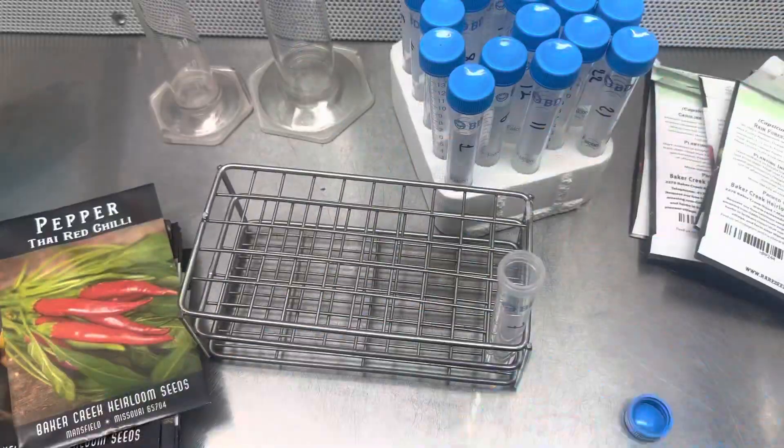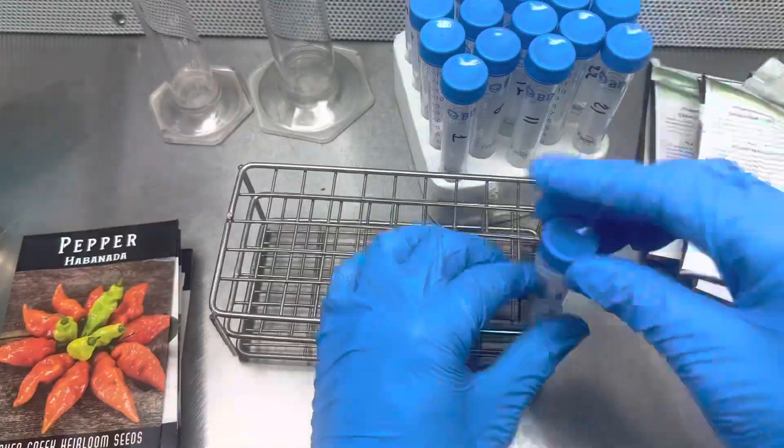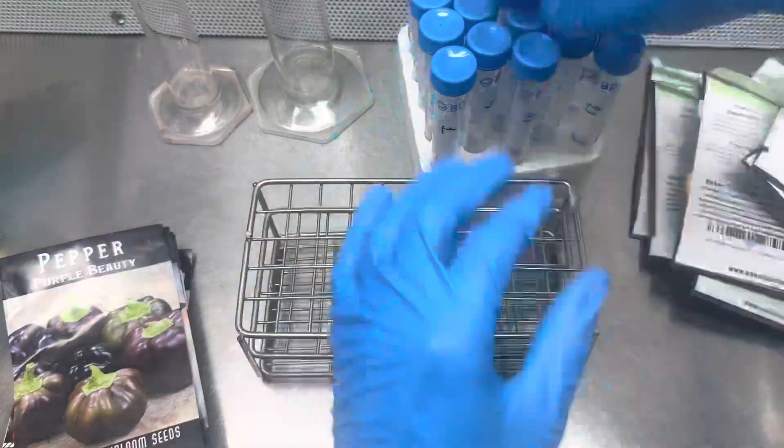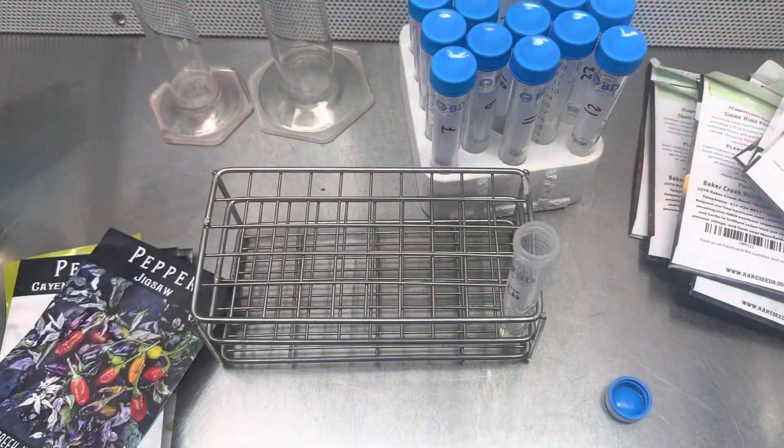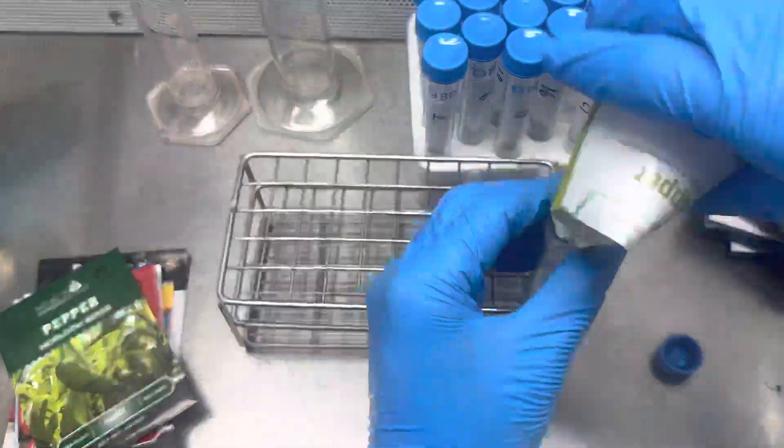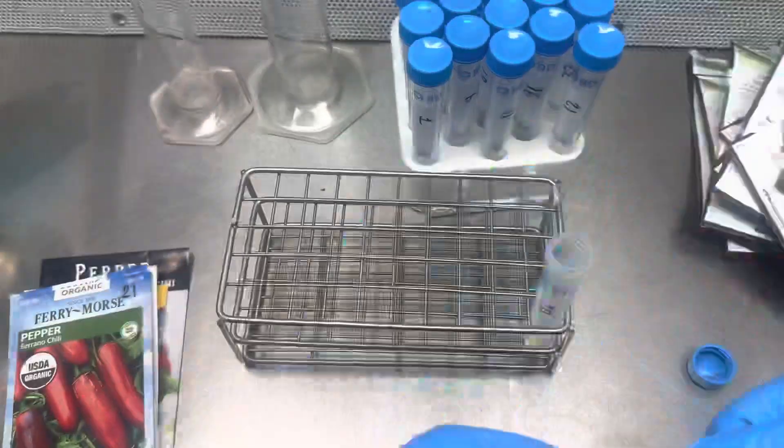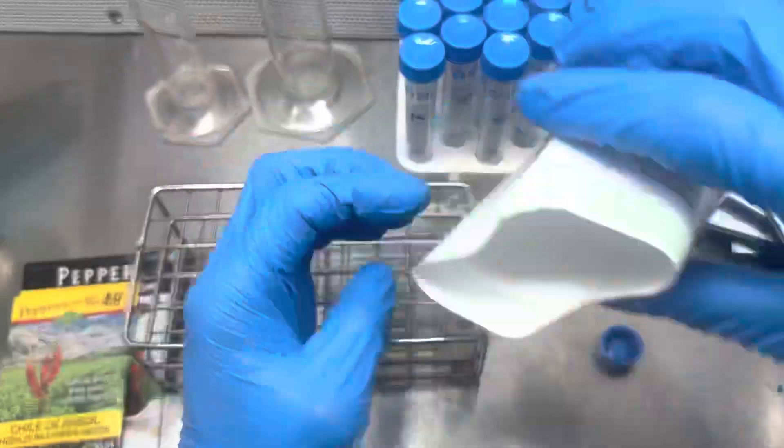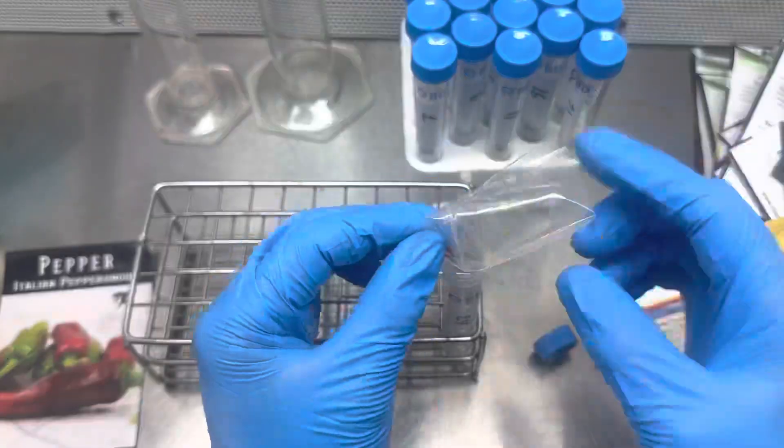This year I'm growing a lot of peppers, 25 different species to be exact. What I do is instead of writing the entire label on my tubes, I just write a number on each envelope and the same number in each tube. Then I place my seeds in the tubes so I can have them ready for the hydrogen peroxide.